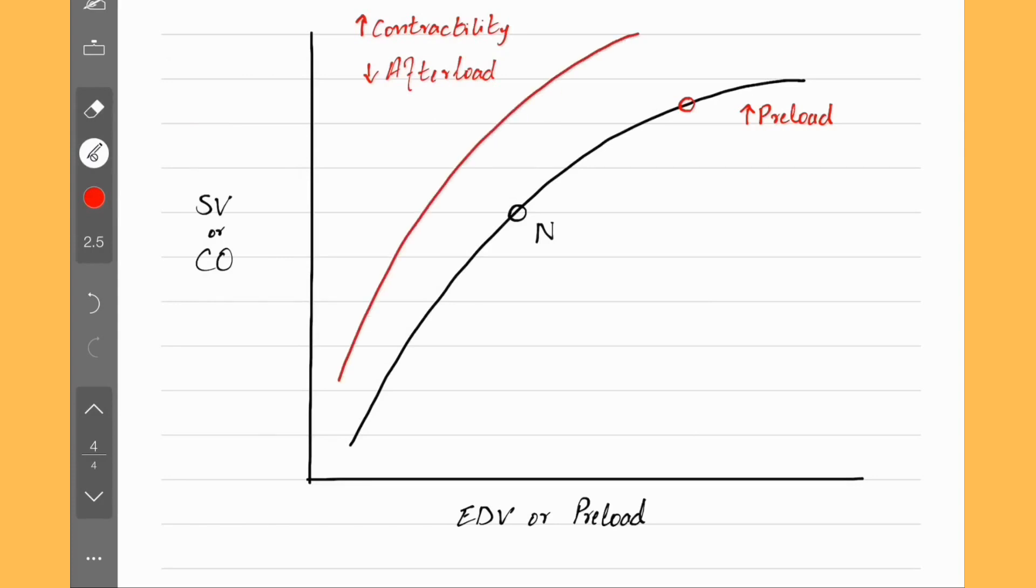So the Starling curve tells us two things. If we put more blood into the heart, it pumps out more blood. If we increase force of contraction or decrease resistance to blood flow, aka decreased afterload, the curve is shifted upwards, meaning the heart is pumping out more blood.